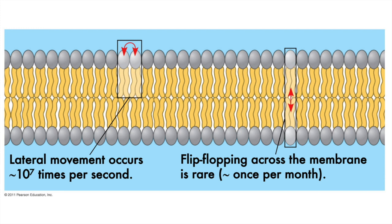The phospholipid bilayer has a mosaic of proteins anchored by R-group chemistry, but the membranes are also fluid, meaning they have flow. The phospholipids are able to flow laterally within a single face of the bilayer with relative ease — ten million times per second. That's pretty free flow. Crossing from one face of the bilayer to the other is difficult — not impossible, but comparatively speaking, very tough.